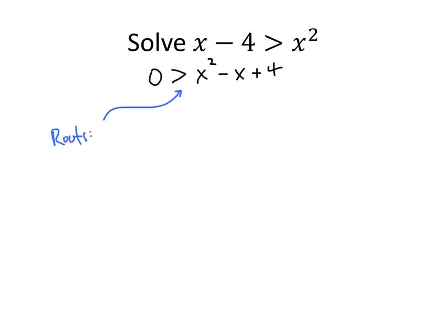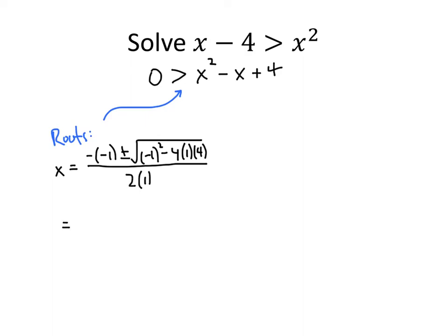So x equals negative b, which is negative of negative 1, plus or minus the square root of b squared minus 4ac — negative 1 squared minus 4 times 1 times 4 — all divided by 2a. That's positive 1 plus or minus the square root of 1 minus 16, which gives negative 15 under the square root, all divided by 2. Because we have a negative number under the square root, this quadratic function has no real roots.